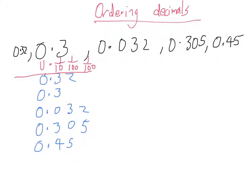What I like to do is look down my list and see which ones have got the most numbers after the decimal point. These two here have both got three numbers after the decimal point. So I like to make all of my numbers have three numbers after the decimal point.